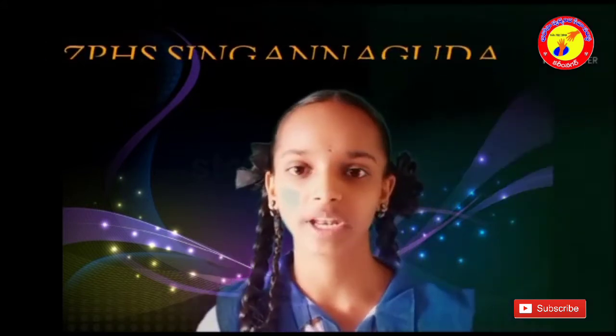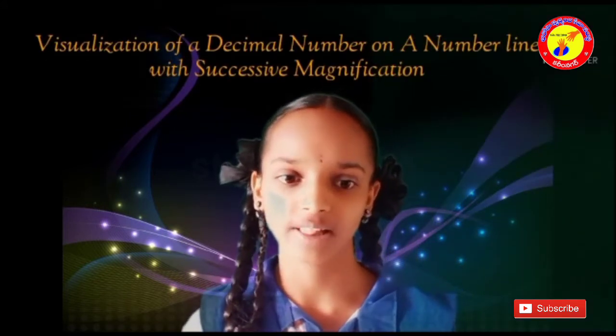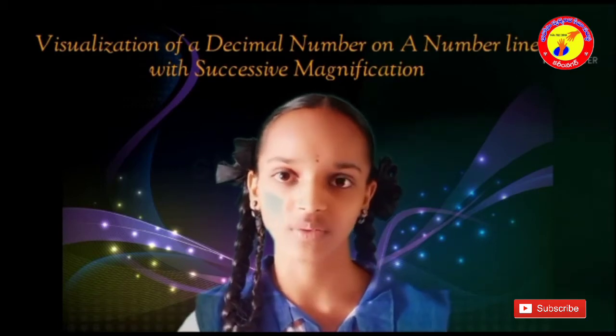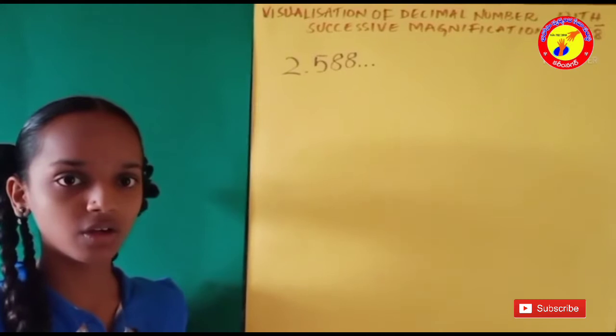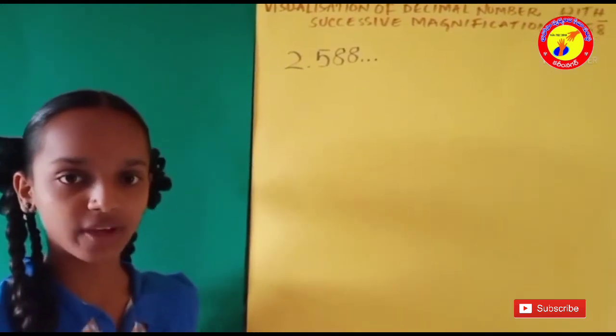Today I am going to explain about visualization of decimal numbers with successive magnification. The decimal number is 2.58 bar.